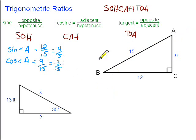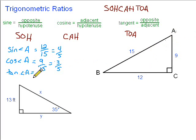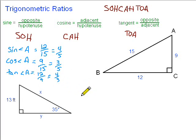And finally, the tangent of angle A. Tangent is the opposite over the adjacent. The opposite of angle A is 12, and the adjacent to angle A is 9. We could simplify that — divide by 3 on top and bottom — and we'd get 4 thirds. Don't change it into a mixed number; just leave it as an improper fraction.